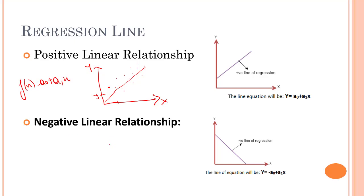Similarly, the opposite is a negative linear relationship. With an increase of x, if y decreases, we have a negative linear relationship. As we can see in the graph, it is a downward sloping line. The equation will be f(x) equals negative a₀ plus a₁x.